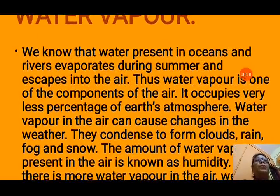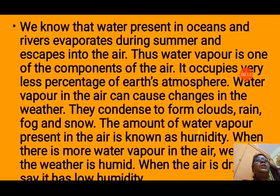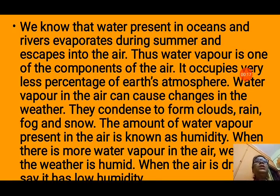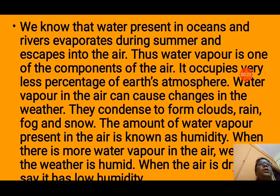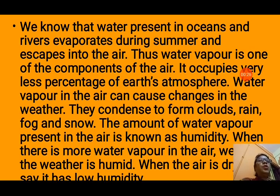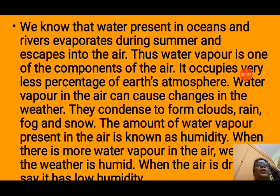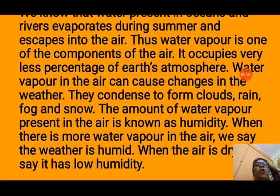Next is water vapor. We know that water present in the oceans and rivers evaporates during summer and escapes into the air. Due to the heat of the sun, water in water bodies evaporates all the time, so water vapor is one of the components of air. It occupies a very small percentage of Earth's atmosphere. Water vapor in the air can cause changes in the weather — it condenses to form clouds, rain, fog and snow. The amount of water vapor present in the air is known as humidity.